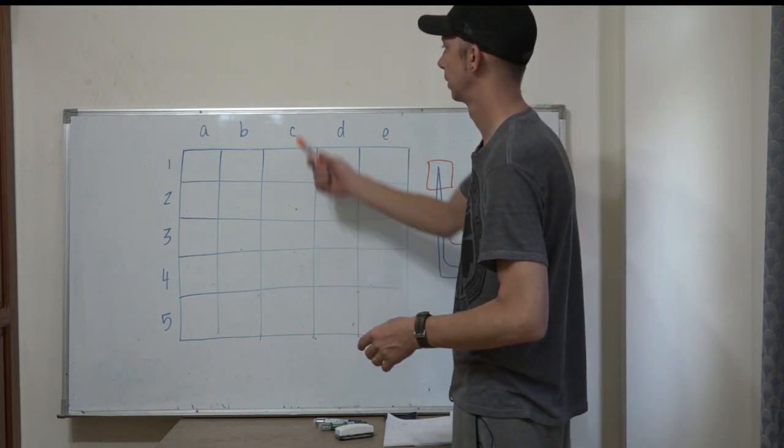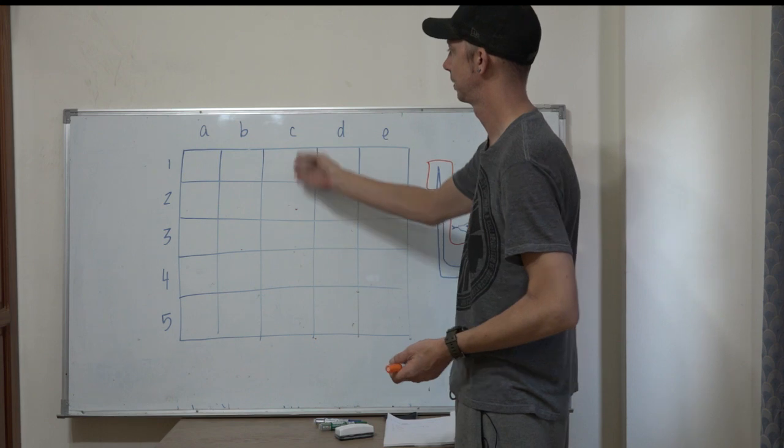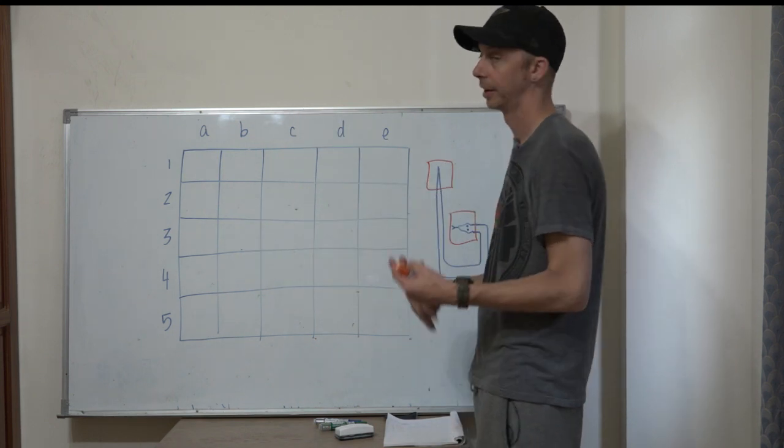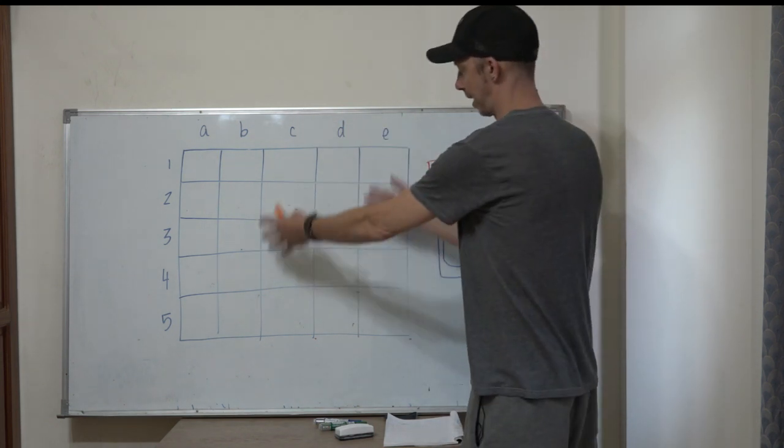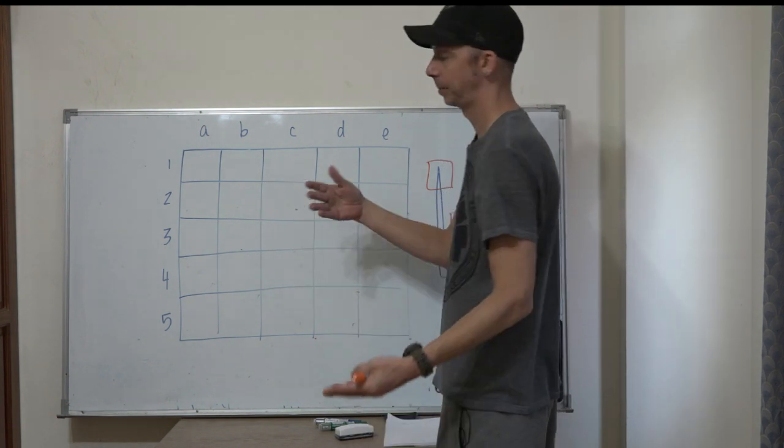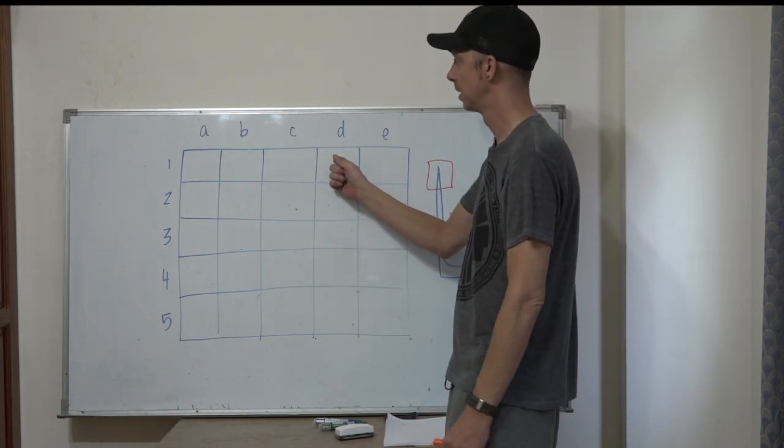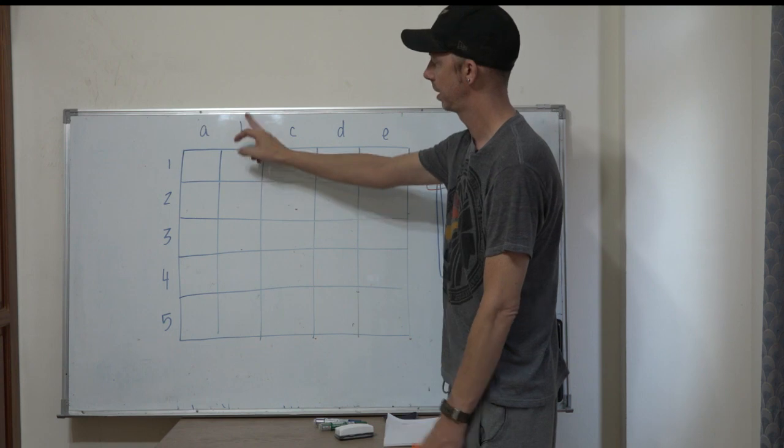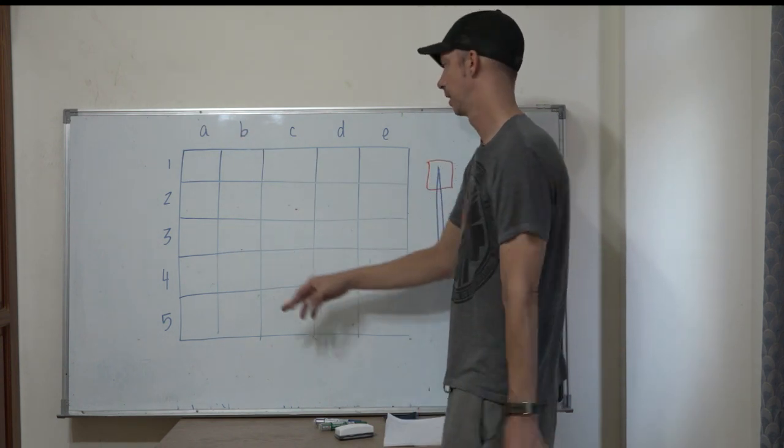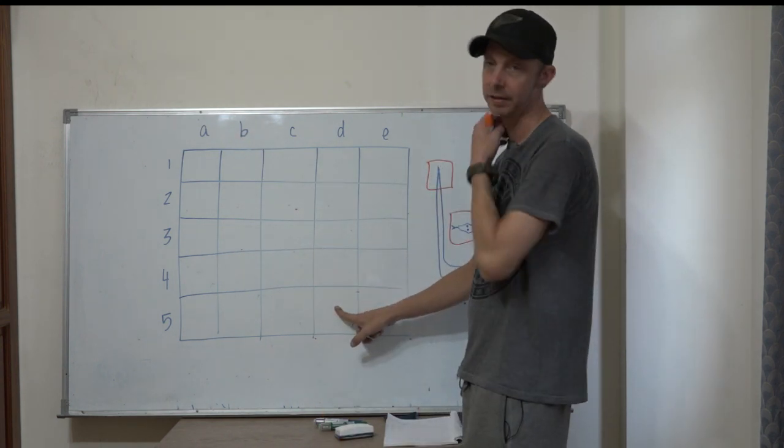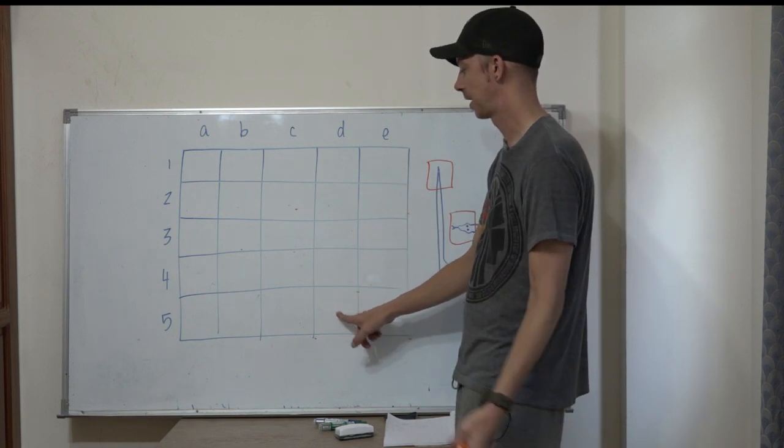Then the winner can choose first. You choose by saying the letter and the number. If they need practice about how to say what they want, then we practice that. This is D1. What is this one? B3. How about this? D5. Great. Now they understand.